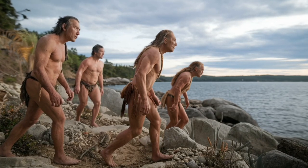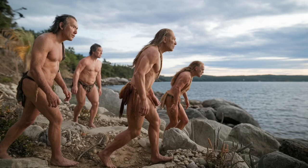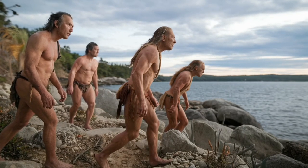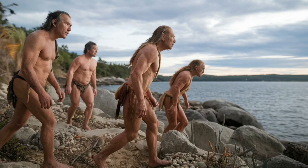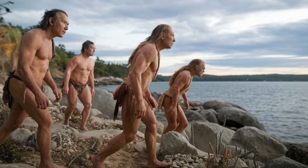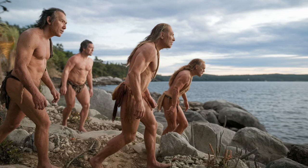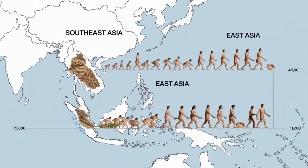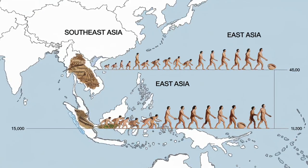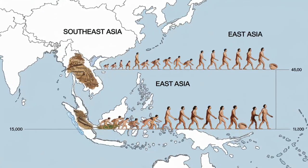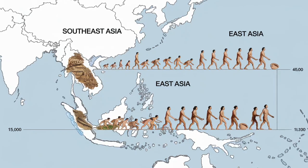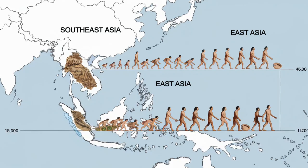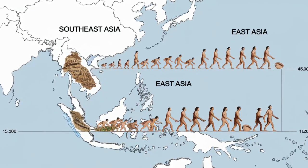To fully grasp Korea's genetic origins, we must first look at how early humans migrated into East Asia. Two primary theories dominate scientific thought on the subject, both offering different explanations for the movements of ancient peoples and their eventual settlement across the region. The first theory suggests a simpler narrative of migration, where ancient humans moved from Southeast Asia and traveled northward, gradually spreading out into East Asia. According to this model, the southern populations were the first to enter East Asia, and from there they slowly moved north, carrying with them their genetic markers, languages, and cultures.